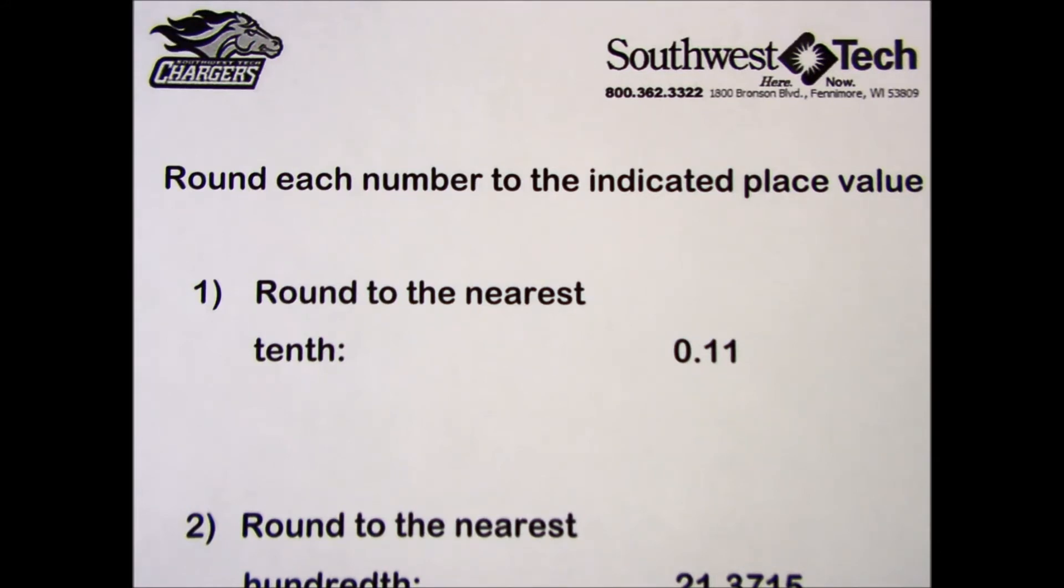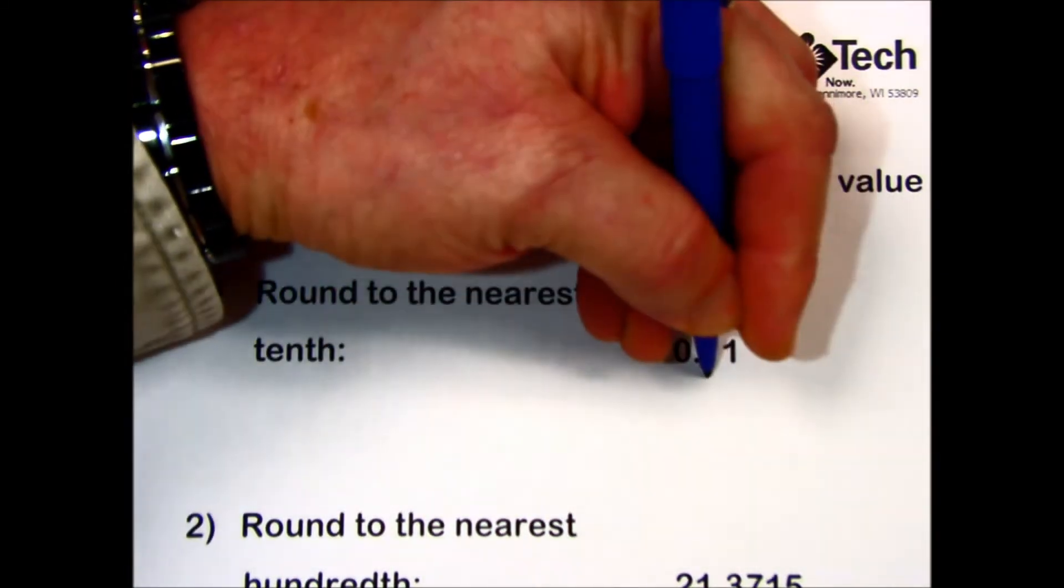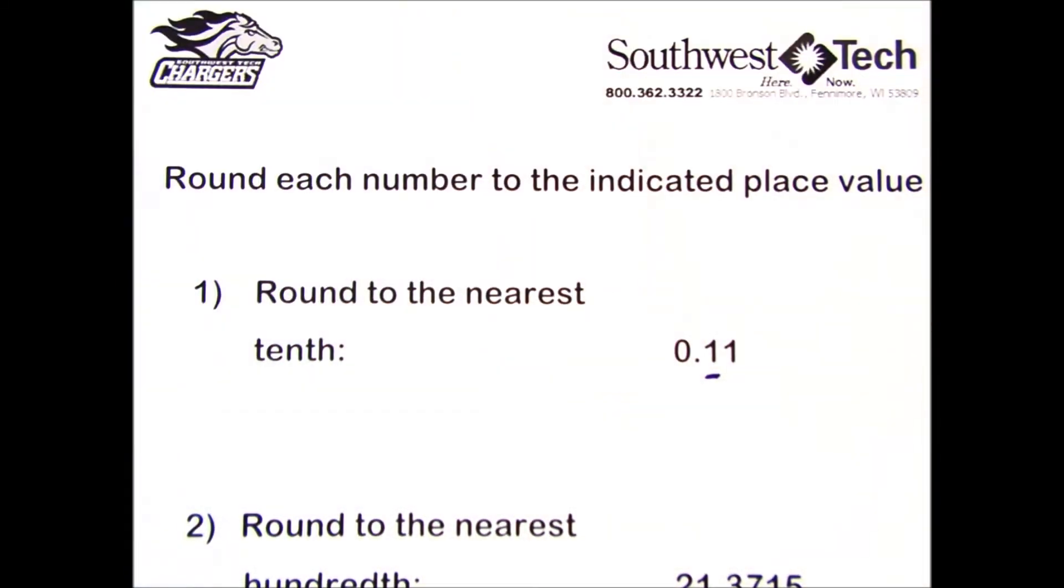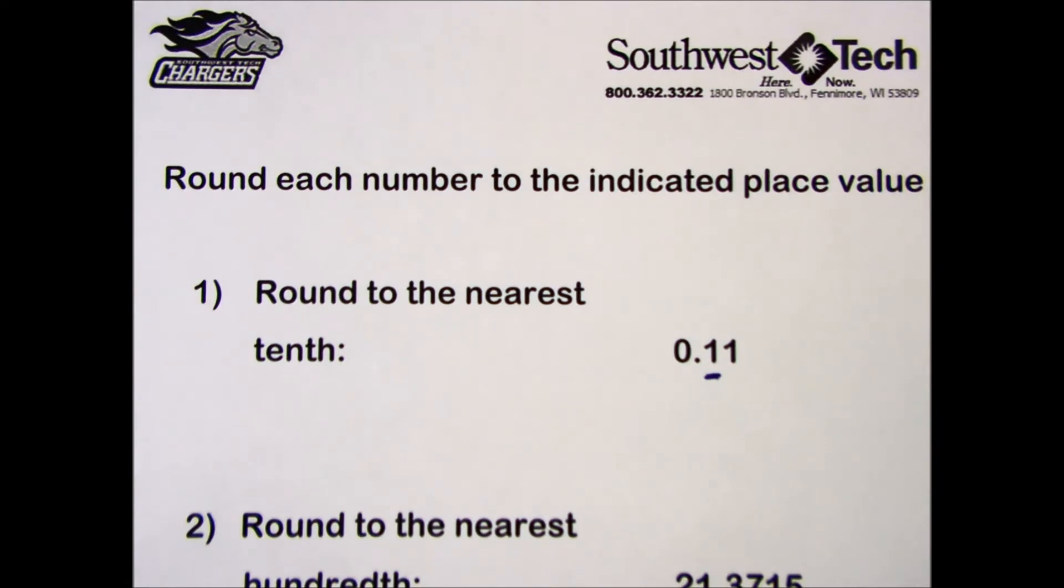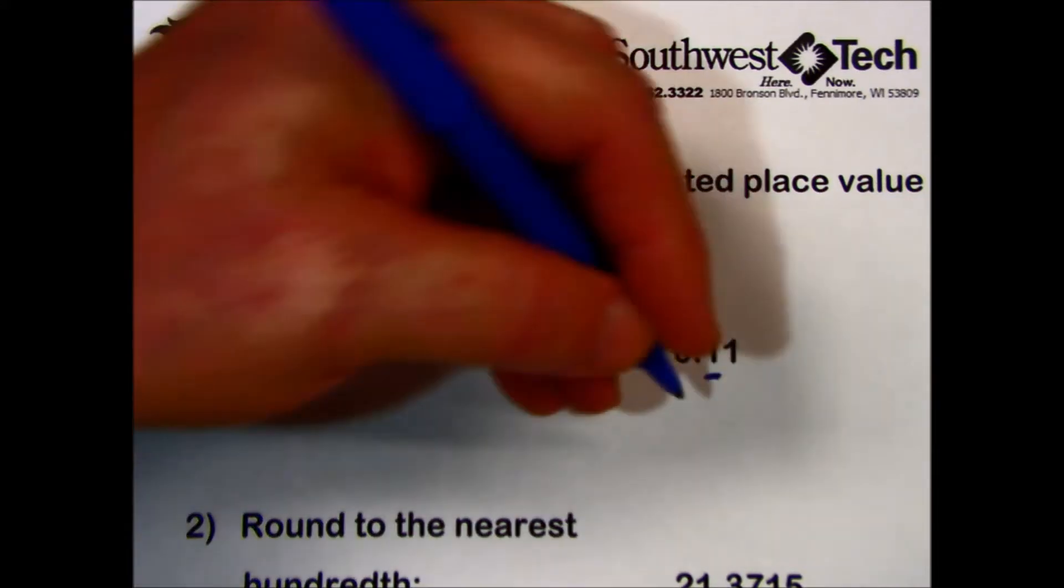Determine the place to which the number is rounded and underline that number. The number to the right of the underlined number is less than 5, so we leave the first one alone and discard the one to the right.